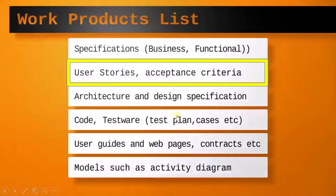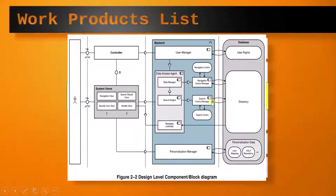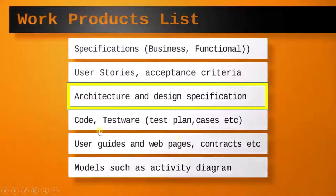Moving towards architecture or design specification — this is how the architecture or design will look. If there is any path or any transaction missing in your architecture or design, by reviewing this particular document we can find that out. That is why it is important to review these documents.